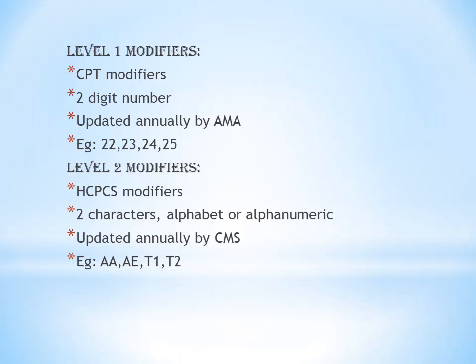Level 2 Modifiers are HCPCS Modifiers. These are two characters — either alphabet or alphanumeric combinations such as A, E, T1, T2. They are maintained by CMS, which stands for Center for Medicare and Medicaid Service. An example is anesthesia by anesthesiologist.